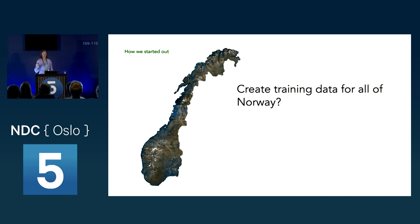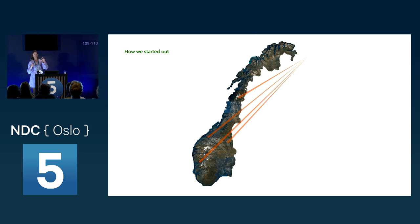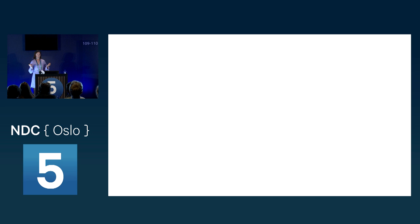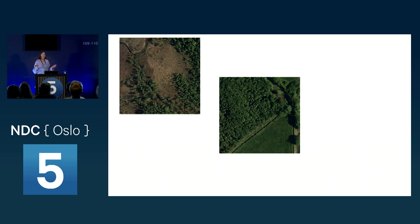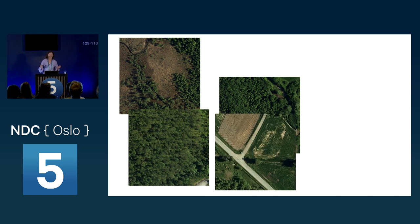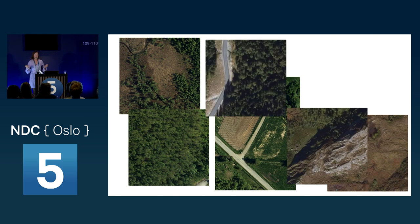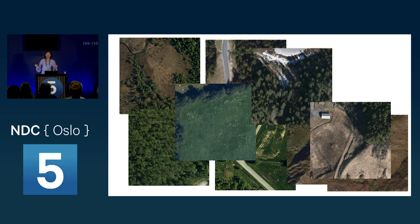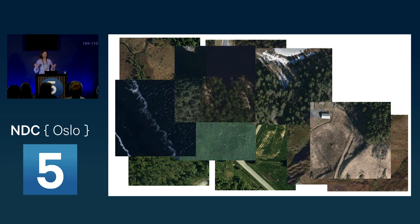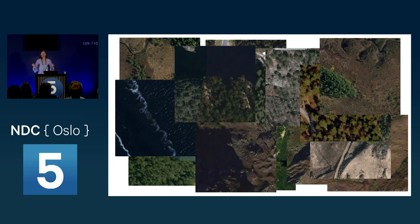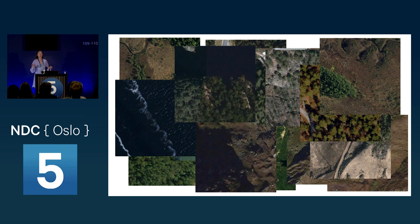There's also the data imbalance problem. If we took random samples across Norway, we'd mostly get forest, agricultural areas, rocks, roads, and ocean — mainly just nature. Only 1.7% of Norway has buildings. So if we created data for all of Norway, the AI would learn that everything is background, and be 98.3% correct. The AI would be really happy — we wouldn't.